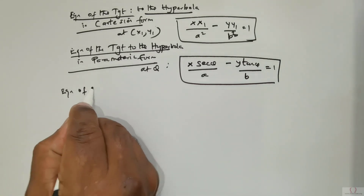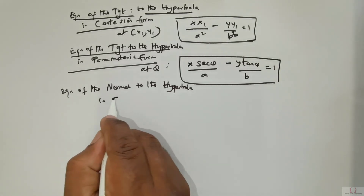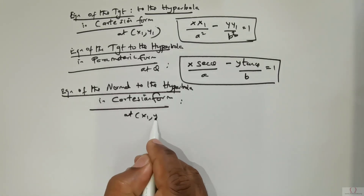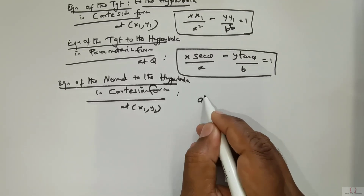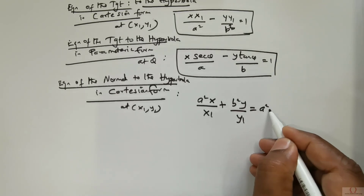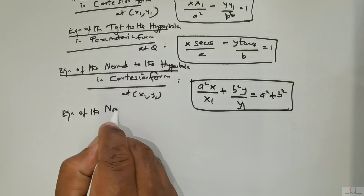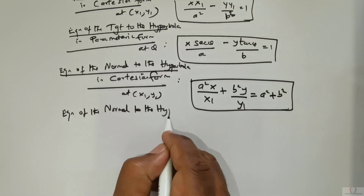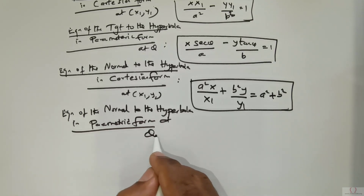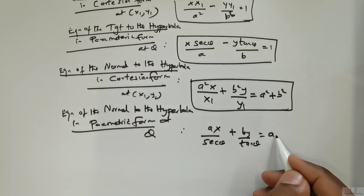The equation of the normal to the hyperbola in Cartesian form at x1, y1 is a squared x divided by x1, positive b squared y divided by y1, is equal to a squared plus b squared. In parametric form, the equation of the normal at theta is a x over secant theta, positive b y over tan theta, is equal to a squared positive b squared.